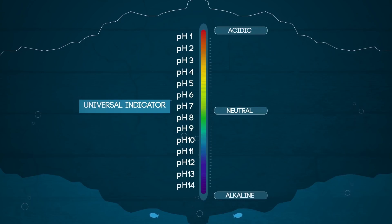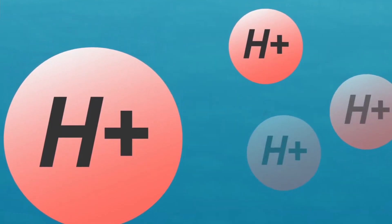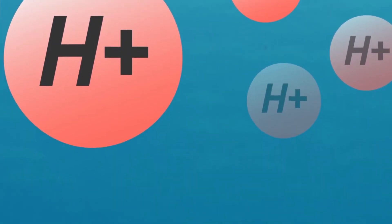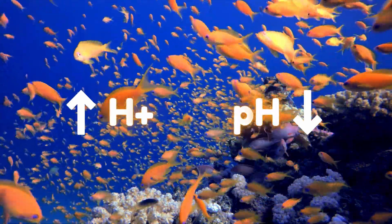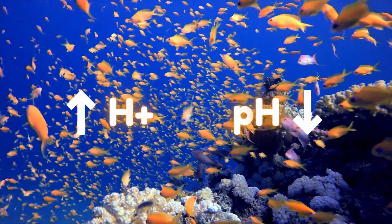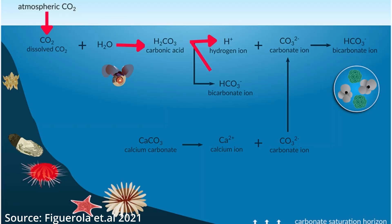The pH measures acidity, and more precisely the concentration of hydrogen ions. The more hydrogen ions present, the lower the pH and higher the acidity. When CO2 is absorbed by the oceans, it dissolves in the water and forms carbonic acid. Then, carbonic acid can dissociate into bicarbonates by losing hydrogen ions. And as we said, the more hydrogen ions, the more acidic the ocean gets.